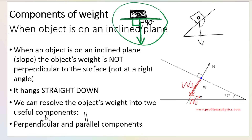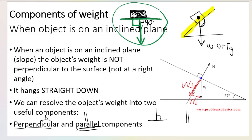As soon as we have an object on a slope, we draw from the center of the object straight down to the ground — that is the weight vector, W or Fg. The angle between the slope surface and Fg is no longer 90 degrees, so we need to break weight up into two useful components: the perpendicular component and the parallel component, both relative to the slope. The symbol for perpendicular looks like ⊥ and for parallel looks like ∥.